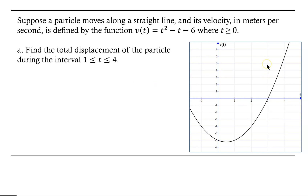Looking at the graph of the velocity function, we can see that on the interval from 1 to 3, the velocity function is negative. That means the particle is moving to the left, and the area between the graph and the x-axis represents the distance traveled to the left. Continuing to t = 4, the velocity becomes positive on the interval from 3 to 4, meaning the particle is now moving to the right.